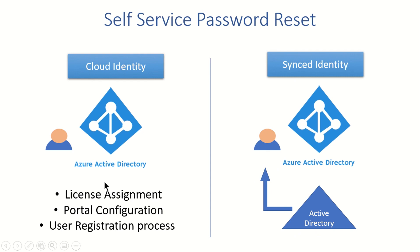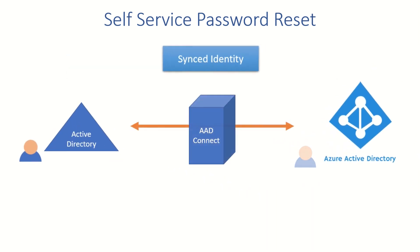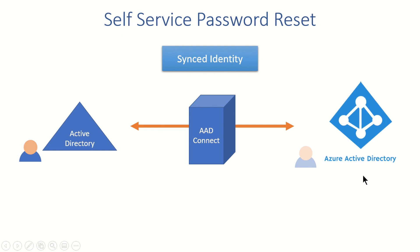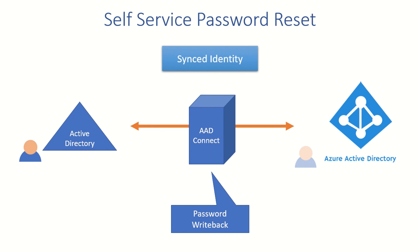For cloud identity, you simply assign a license, enable some portal options, and users can register themselves. For synced identities it's different — AD Connect syncs user objects and passwords to Azure AD. Since the SSPR request is initiated by Azure AD, the resulting password change must be written back to local AD, which is why you need password writeback enabled on AD Connect.